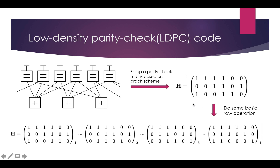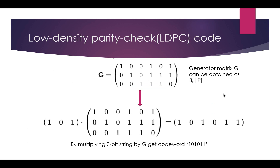The parity check matrix is called H. Each row refers to the relations for the three redundant bits, so there are three rows. The six columns refer to the six information bits. A one means there is a relationship between the information code and the redundant code; a zero means there is no relationship. You then perform basic row operations on the initial parity check matrix to get the generator matrix G. You multiply your information bits with G to get the real codeword, which in this case is 101011.